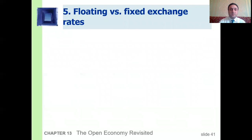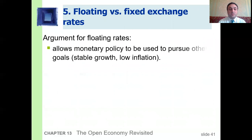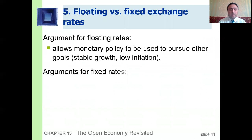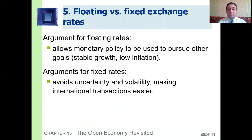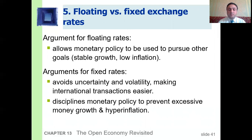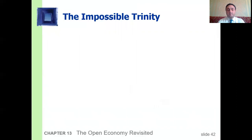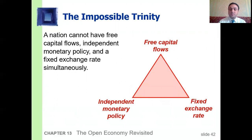Floating versus fixed exchange rates. The argument for floating rates: they allow monetary policy to be used to pursue other goals like stable growth and low inflation. The argument for fixed rates: they avoid uncertainty and volatility, making international transactions easier, and they discipline monetary policy to prevent excessive money growth and higher inflation. However, there is the impossible trinity: a nation cannot simultaneously have free capital flows, an independent monetary policy, and a fixed exchange rate — it's impossible.